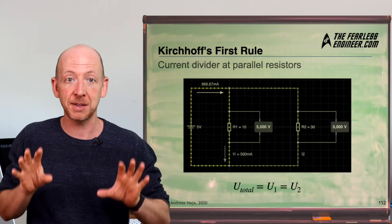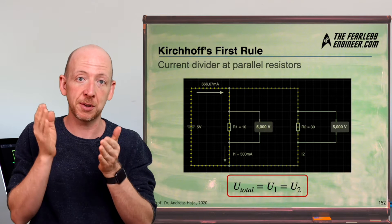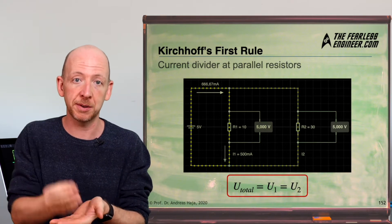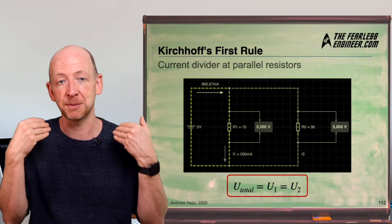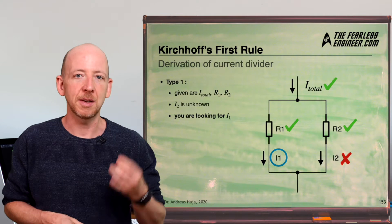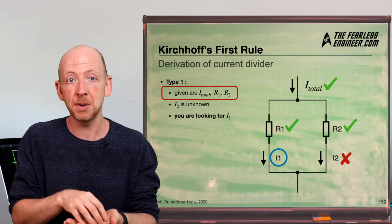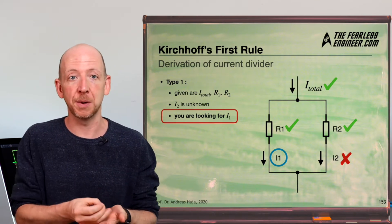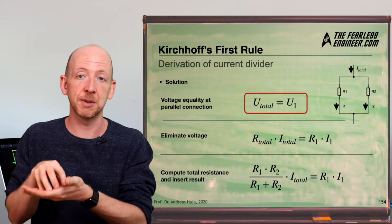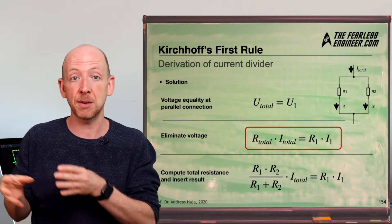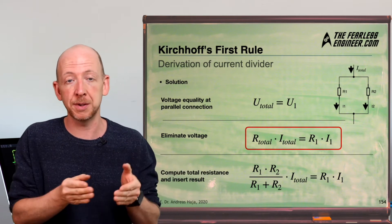We use this voltage equality to calculate the partial currents. We write: V_total equals V across R1 equals V across R2. The question of how to continue depends on the values given in the task. Assuming we know the overall current I_total and both R1 and R2, and we are looking for partial current I1, we set the total voltage equal to the voltage across R1 and replace voltages with current and resistance using Ohm's law, giving R_total × I_total = R1 × I1.